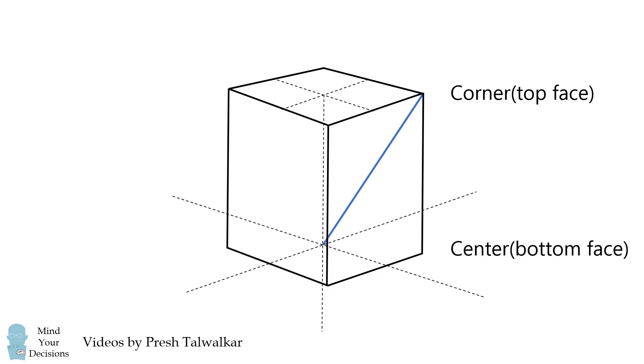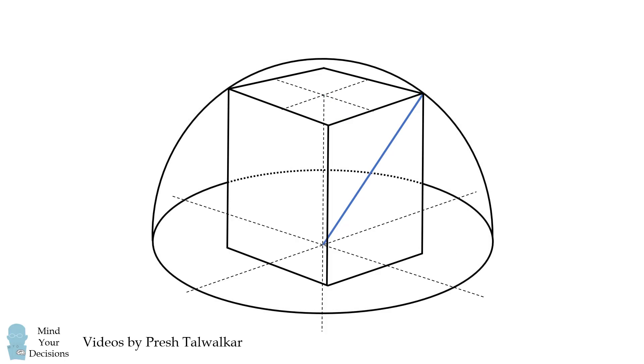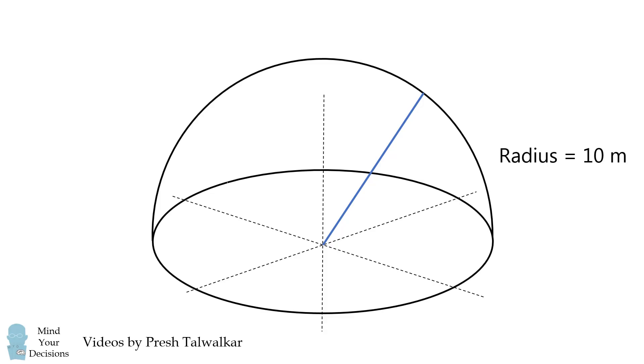Now let's go back to the original diagram and focus on just the hemisphere. This blue line is exactly a radius of the hemisphere and its radius is equal to 10 meters.